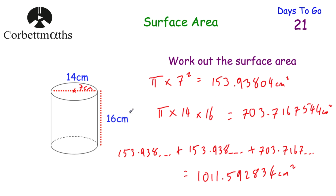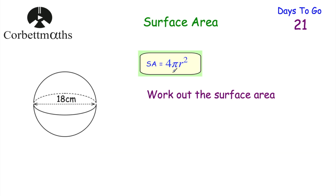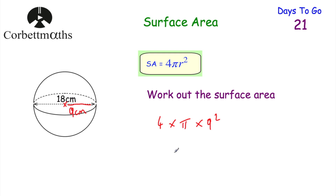We've had a look at how to find the surface area of cylinders, cuboids, and other prisms such as triangular prisms. Now let's look at how to find the surface area of a sphere. The surface area of a sphere is found using 4πr². We do 4 multiplied by π multiplied by the radius squared, and that formula is given to you. The diameter of this sphere is 18 centimetres, so the radius halfway across is 9 centimetres. So we do 4 × π × 9².